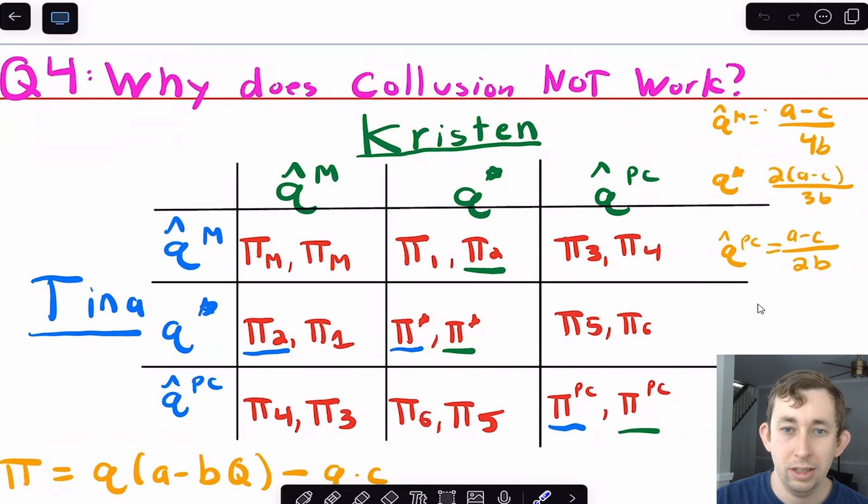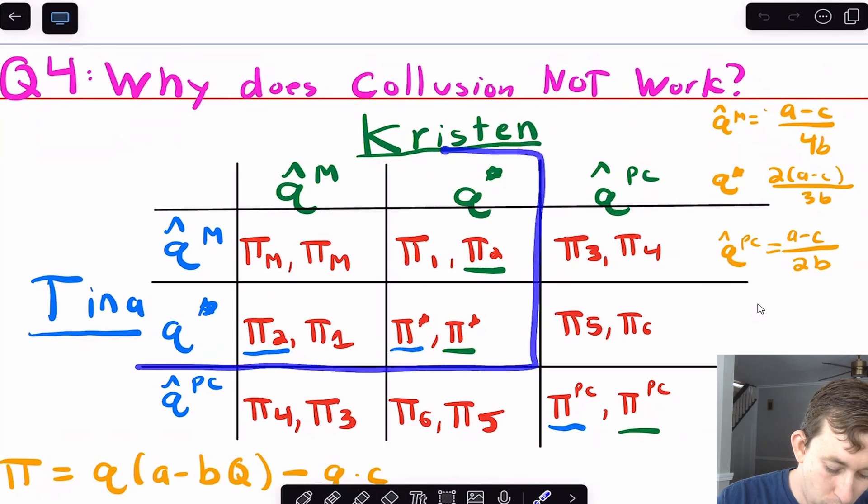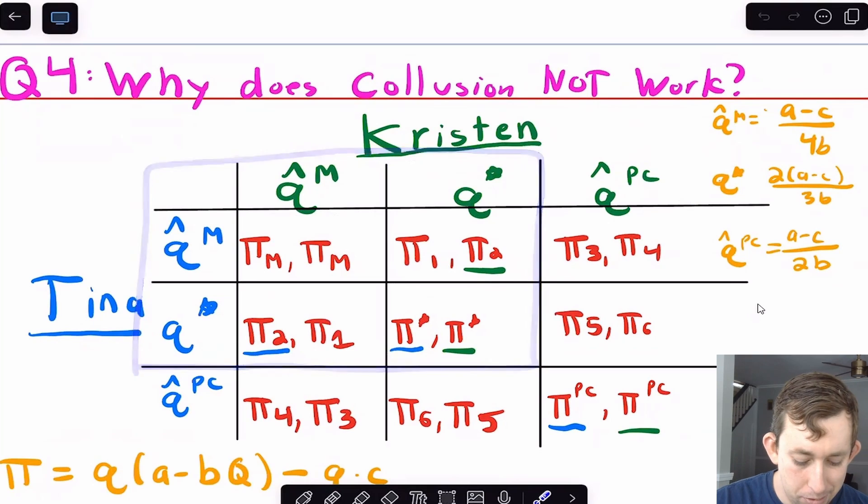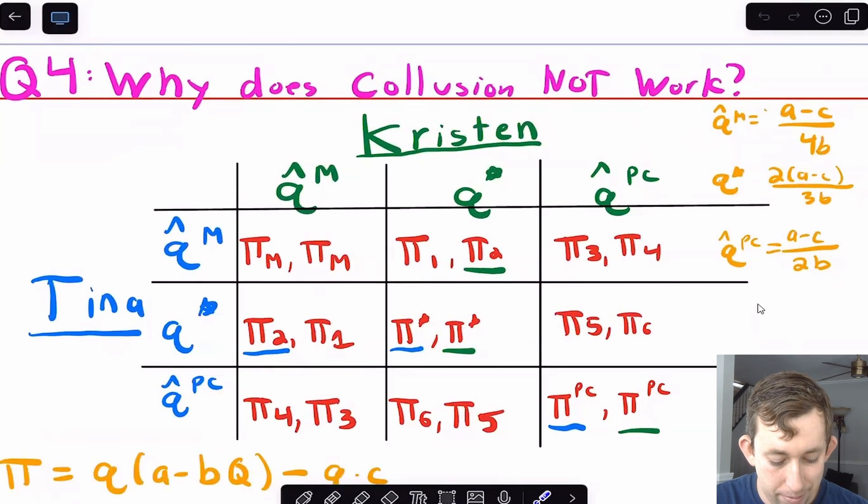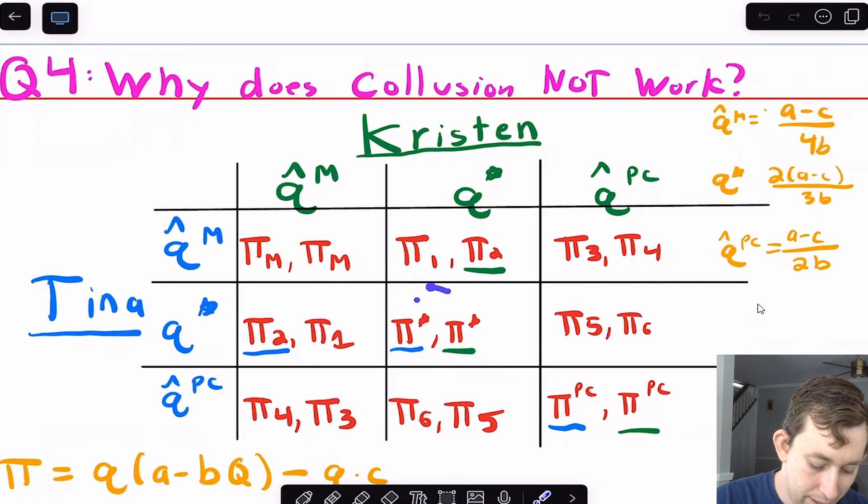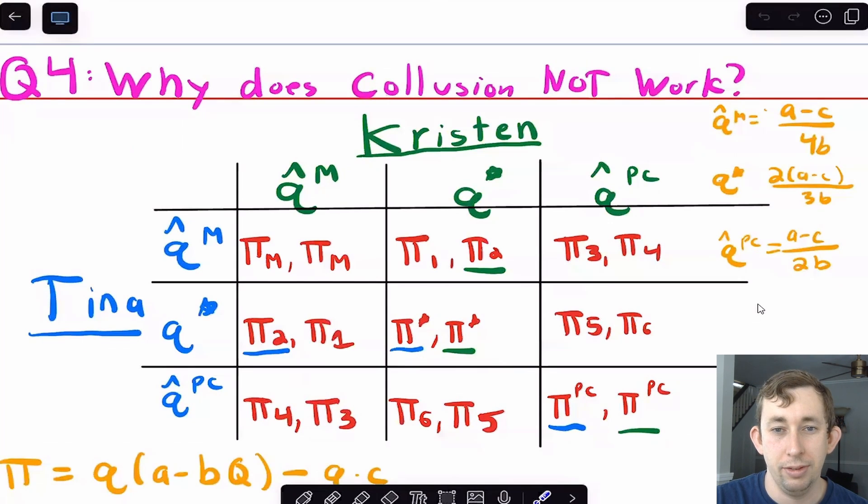So again, the point really of this video was to get these three quantities using the math. And just to explain the intuition of why the cartel doesn't last. In the next part of this video, I'm going to talk about the specific profits to make it a little more clear to show exactly that q star q star is going to be the Nash equilibrium in this game. And that's going to conclude the discussion of the Cournot equilibrium.